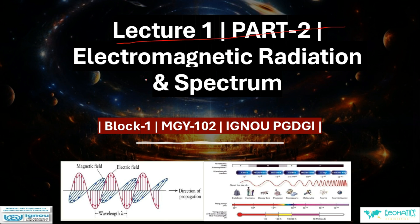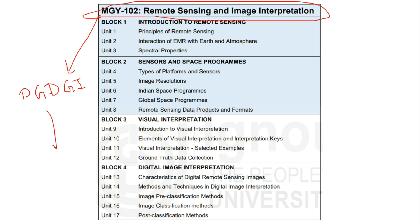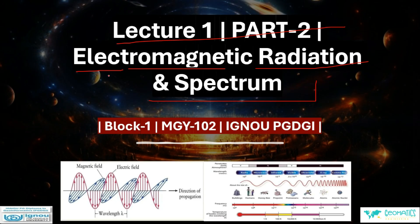Welcome back to the channel Geomatics Engineering. In today's lecture we are going to talk about electromagnetic radiation and the electromagnetic spectrum. We have started the remote sensing and image interpretation subject from our PG Diploma in Geoinformatics course from IGNOU. In the last lecture we covered the principles and history of remote sensing, and the remaining part of that unit is electromagnetic radiation and spectrum — hence this is Lecture 1, Part 2.